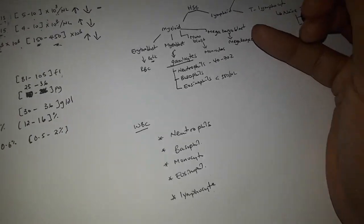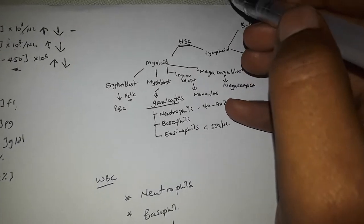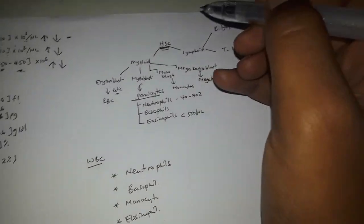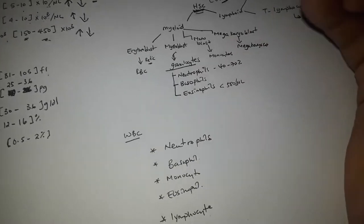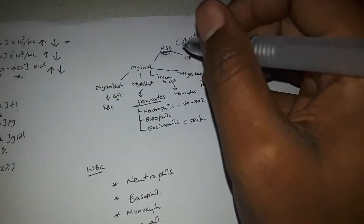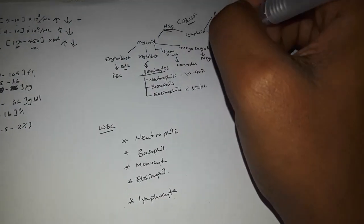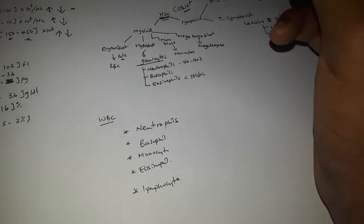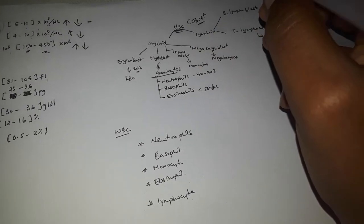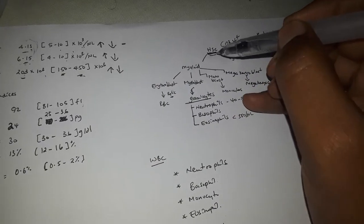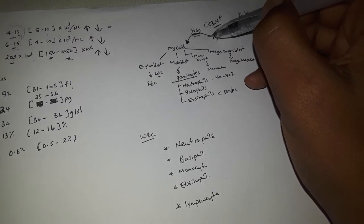The hematopoietic stem cell helps us understand blood cell lineage. There is a distinction between the hematopoietic stem cell and different kinds of cells it gives rise to. From the hematopoietic stem cell, we get myeloid stem cells and lymphoid stem cells.